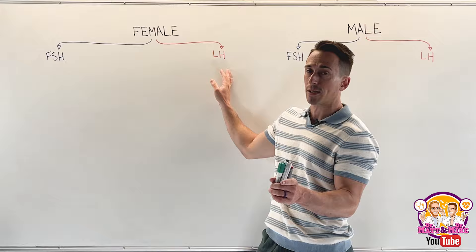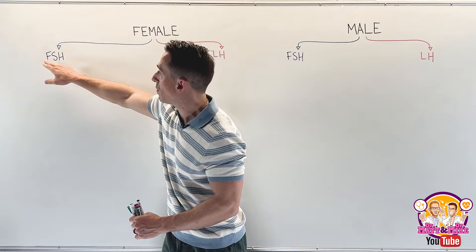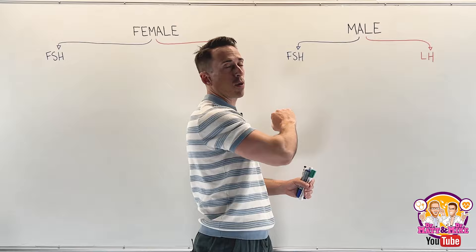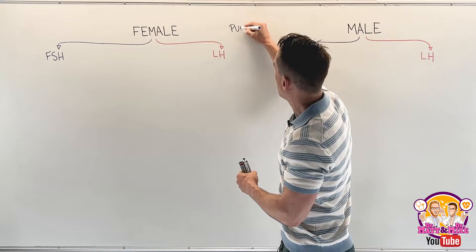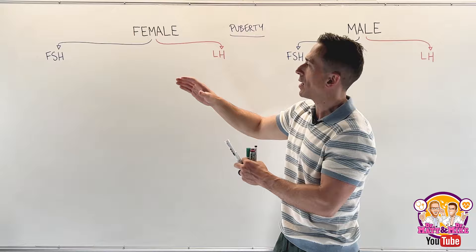FSH and LH are named after what they do in the female reproductive system: follicle stimulating hormone and luteinizing hormone. Unfortunately, their names tell you nothing about what they do in the male reproductive system, but the hormones are used in both. These hormones start to get released in their highest abundance once puberty hits, for both male and female reproductive cycles.